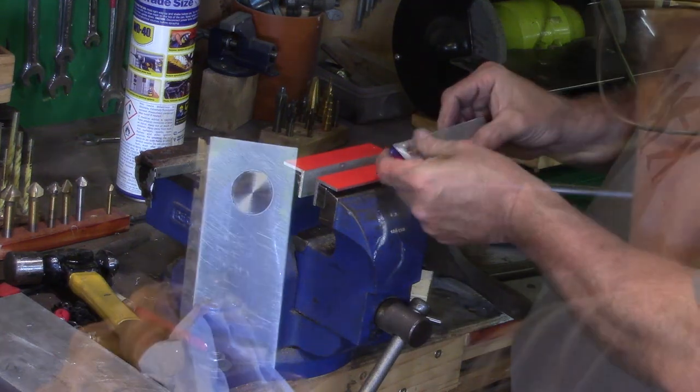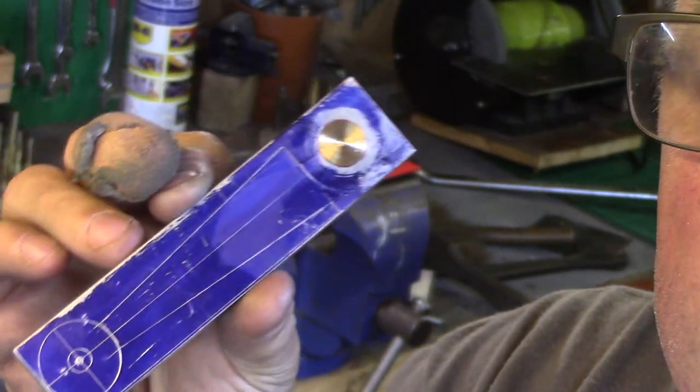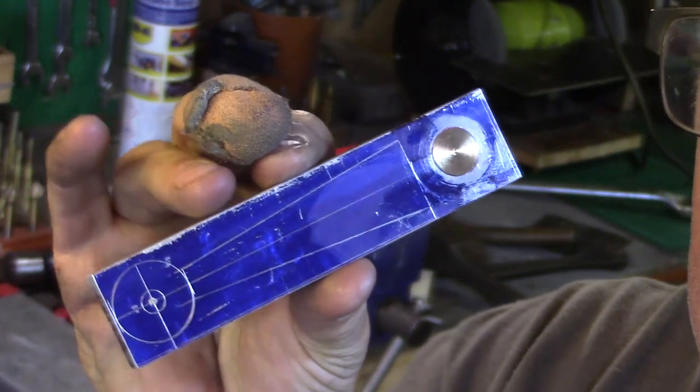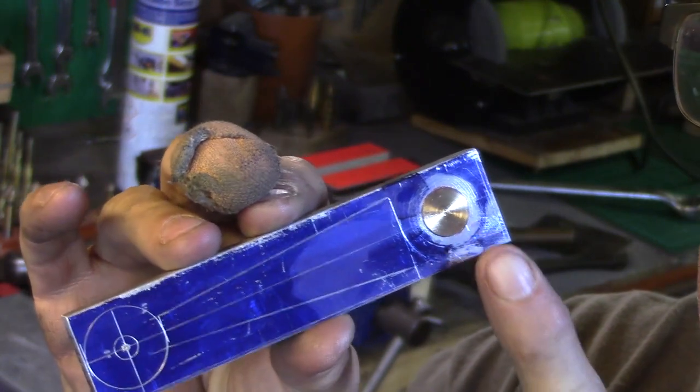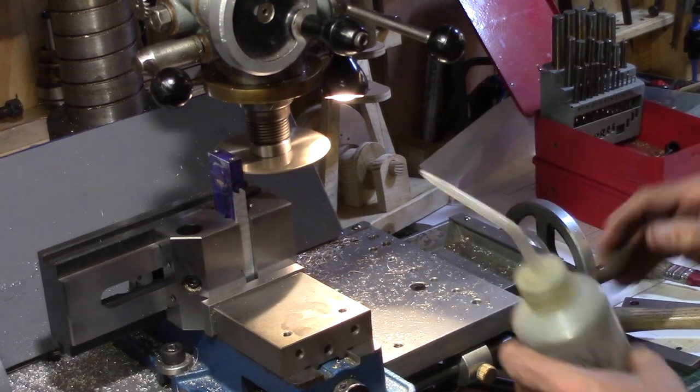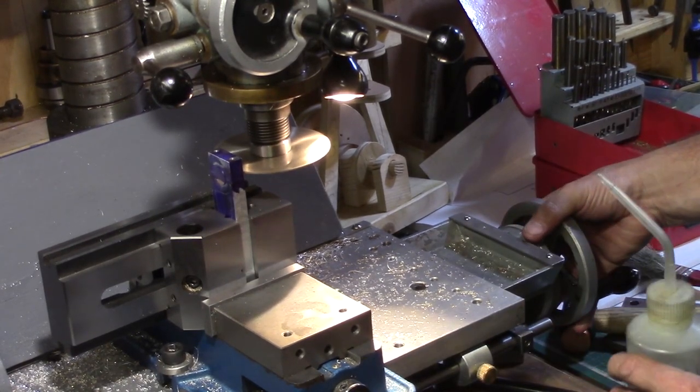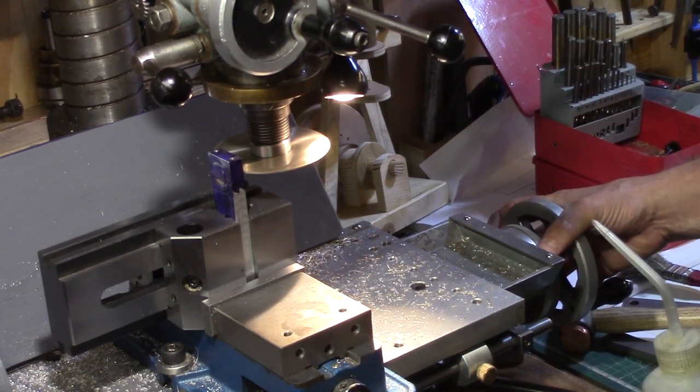This was now ready to be taken back to the mill for slitting through the centre. A 1mm slitting saw was set up and the conrod was sawn through in the centre of the bearing.